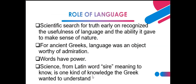What is the role of language in the human quest for understanding the natural world? The ability to name and classify objects found in nature was seen as the first step in knowing. Scientific research for truth early on recognized the usefulness of language and the ability it gave to make sense of nature. For the ancient Greeks, language was an object worthy of admiration. Words have power, and thinking in terms of a common system generated by the speaker and received by the listener is useful in the pursuit of knowledge.